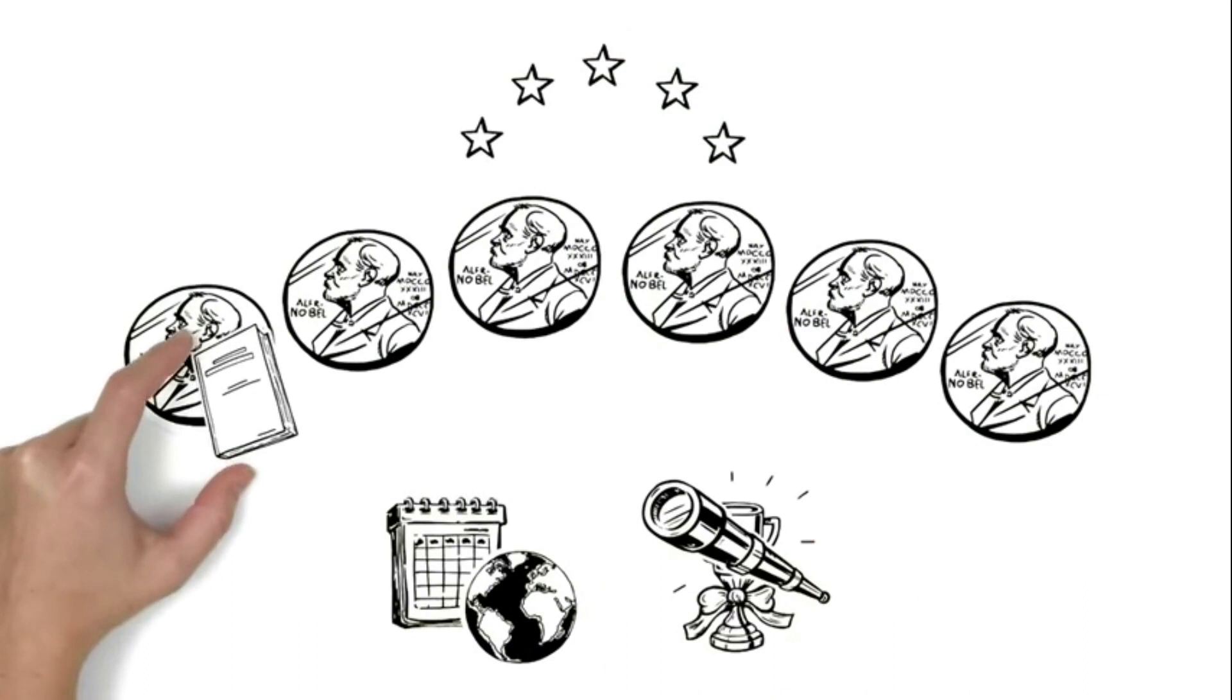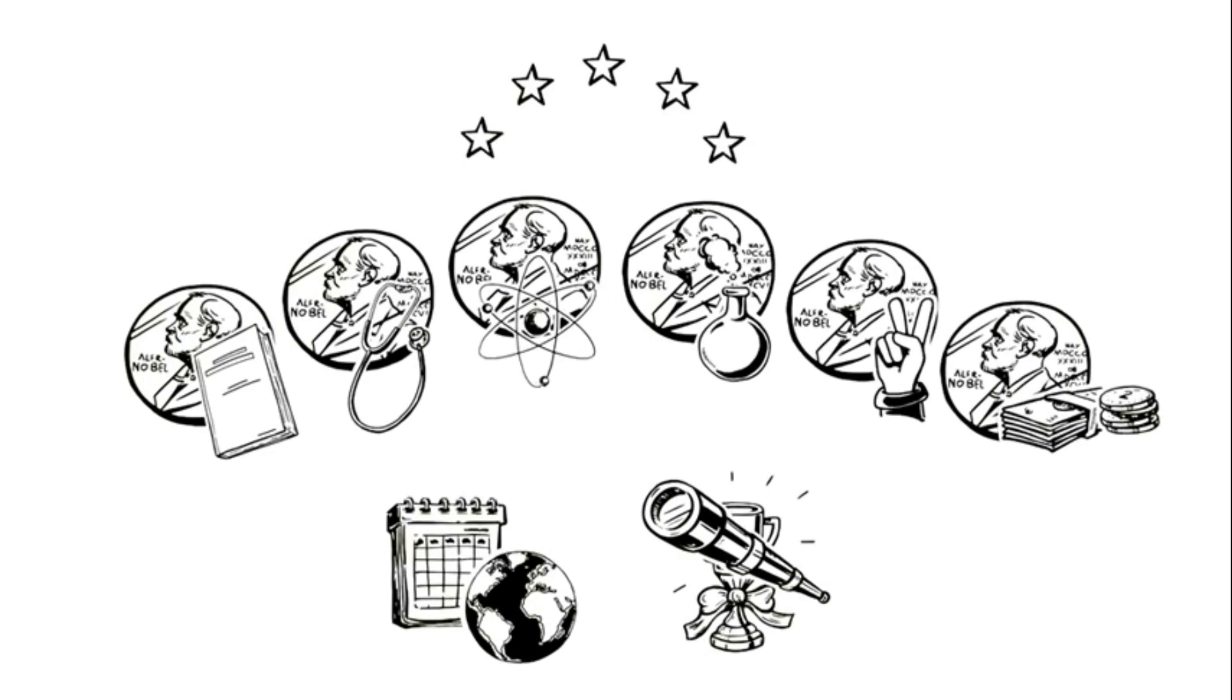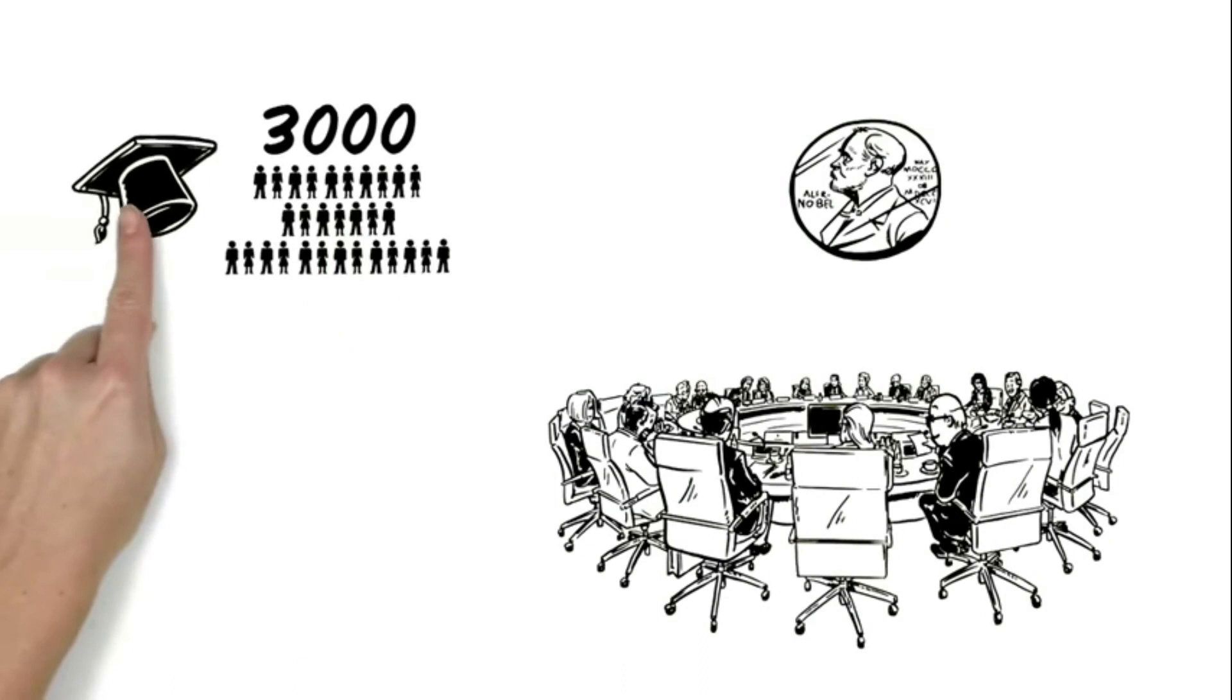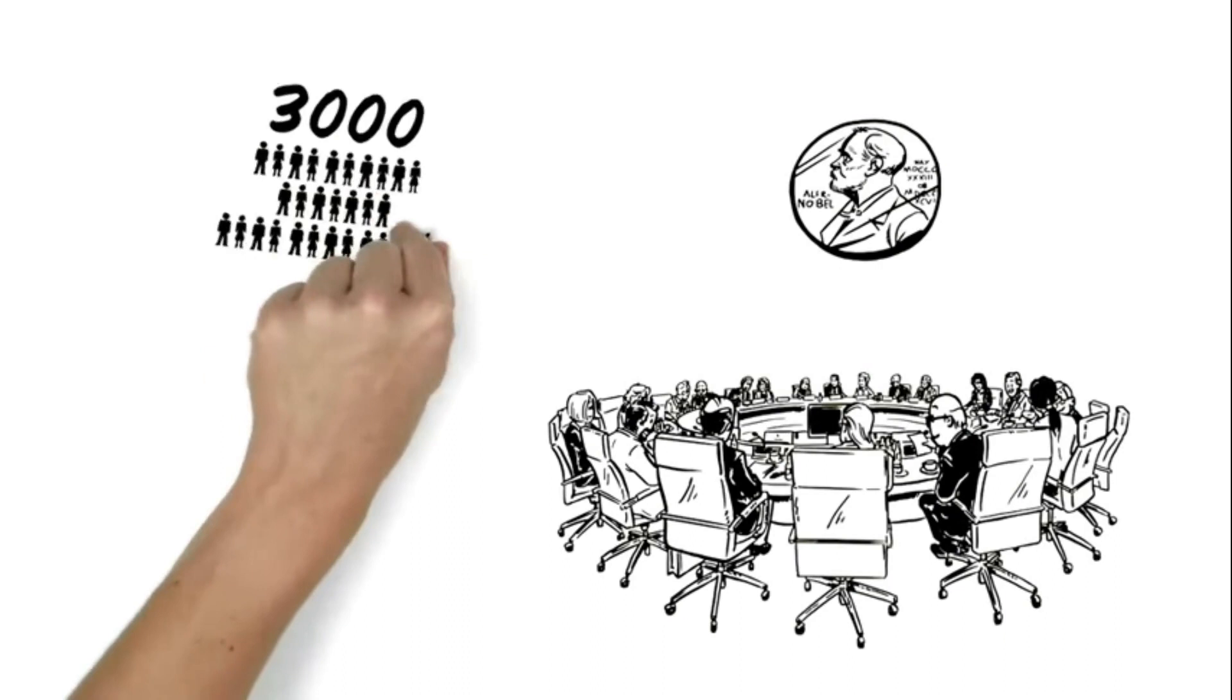A separate committee awards each prize, but the processes are similar. About 3,000 people, usually academics, have the right to nominate candidates. From these, the Nobel Committees choose around 300 potential recipients and prepare a report reflecting the advice of experts. The prize awarding institutions then select the laureates by a majority vote.